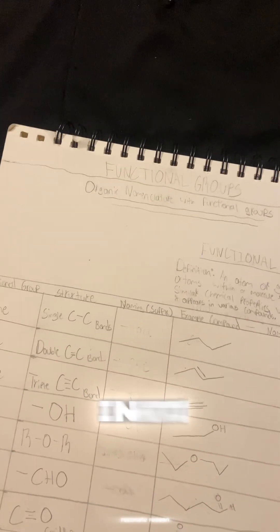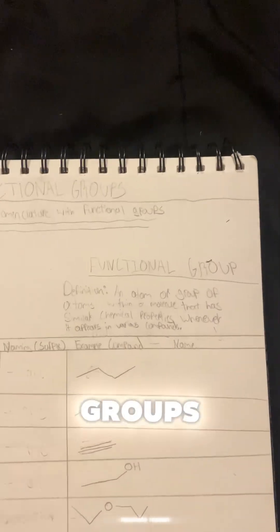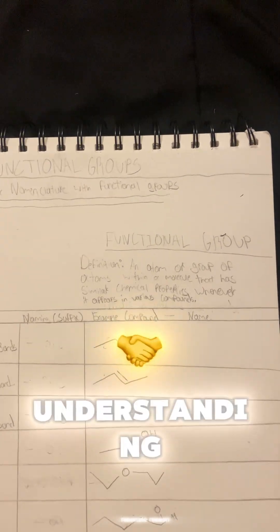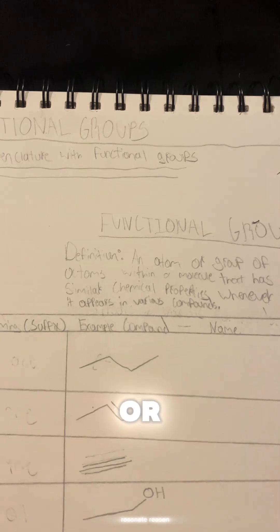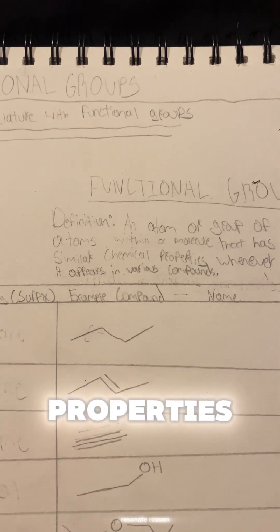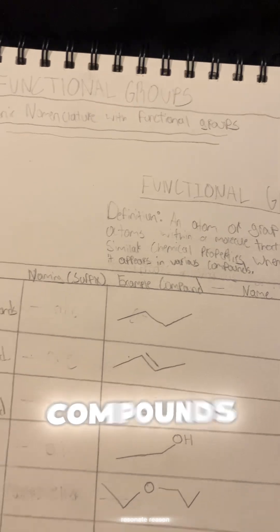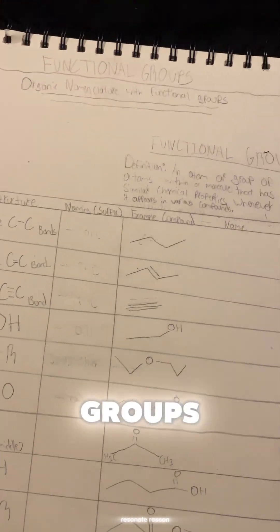The first step to being able to name organic compounds with functional groups is understanding what a functional group is. By definition, a functional group is an atom or group of atoms within a molecule that has similar chemical properties wherever it appears in various compounds. To summarize, functional groups are a group of atoms within a molecule that determines how it behaves.